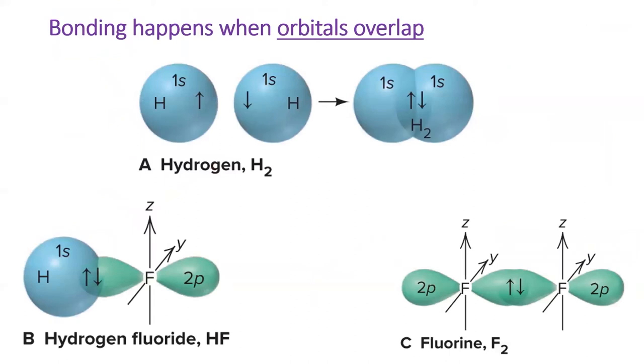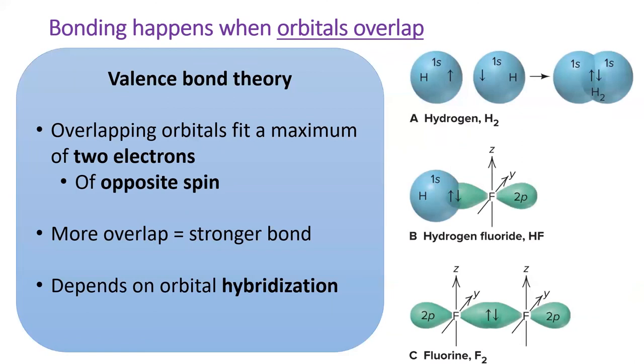For the rest of this chapter, we'll see that it's actually a mix or hybridization of orbitals which creates a covalent bond. But for now, just understand that a bond forms when two orbitals overlap and have room for an extra electron. We call this idea of bonding valence bond theory. In general, the more overlap between the two orbitals, the stronger the covalent bond will be.